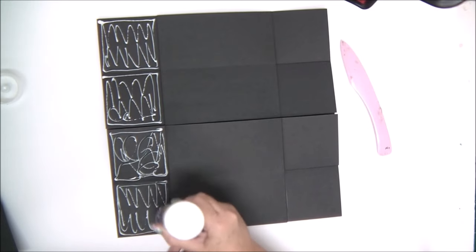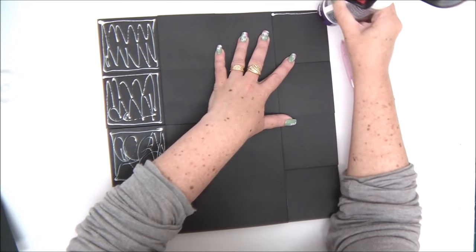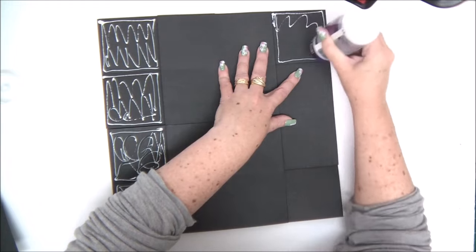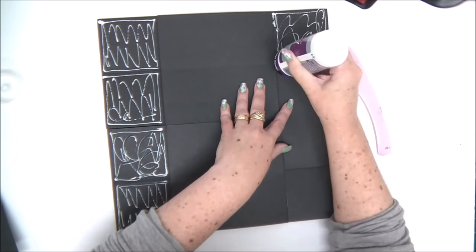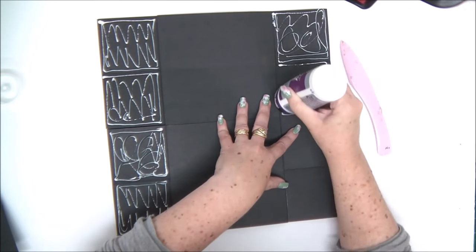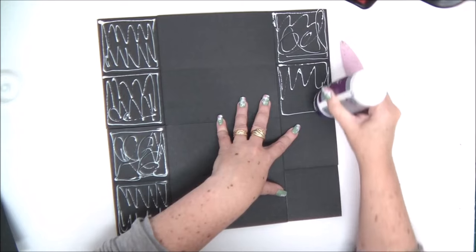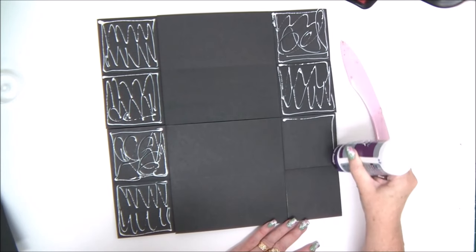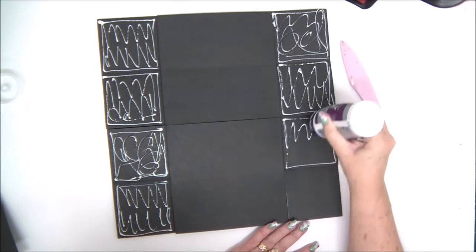Just make sure that you don't apply too much glue. You don't want the paper to curl or to wrinkle. So I continue with applying glue to all the sides.